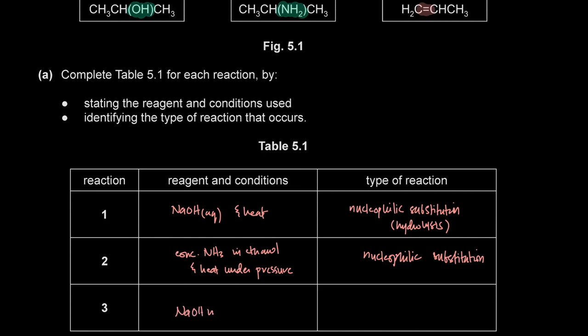For elimination of halogenoalkanes to form alkenes, use NaOH and ethanol with heat.